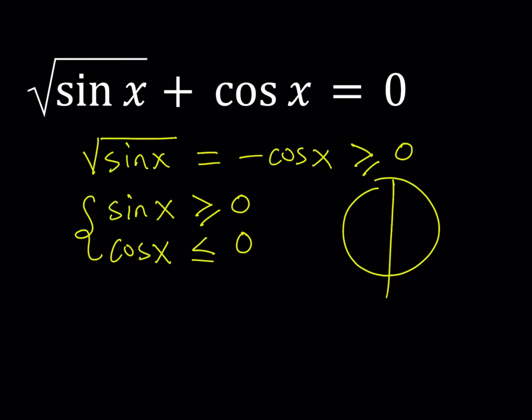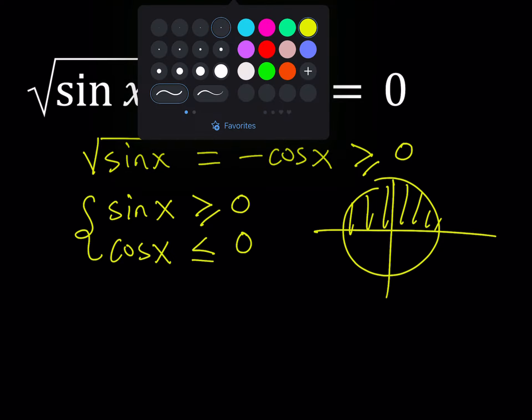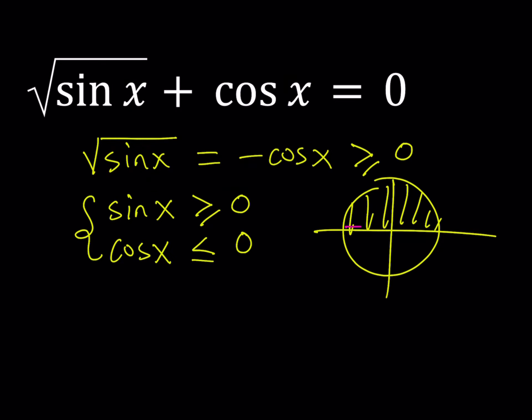If you consider the unit circle you're looking at four different quadrants. Sine x is positive in the first and second quadrant but if you want cosine to be negative then you're basically looking at the second quadrant.